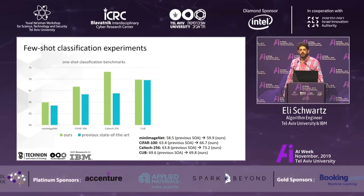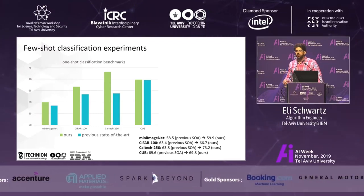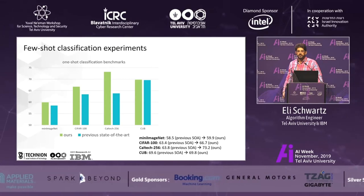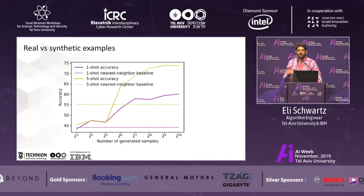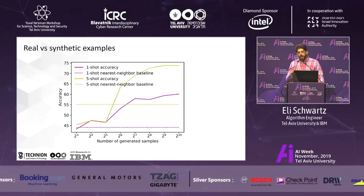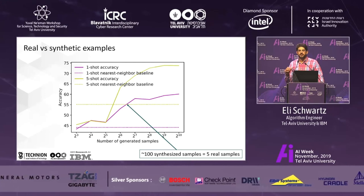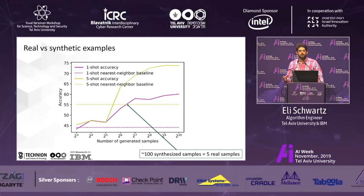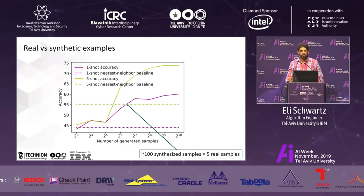By doing so, we observe a substantial improvement over the state-of-the-art. As we generate more samples, accuracy improves, suggesting we keep generating meaningful, useful information — up to saturation at around 1,000 generated samples. We can also see that 100 synthesized samples are equal to around 5 real samples. So obviously not every sample we generate is as useful, but they are useful. After generating many of them, we get to the performance of using a few real images.